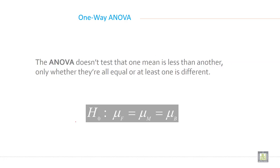The ANOVA does not test that one mean is less than another, only whether they're all equal or at least one is different. So just write the null hypothesis like this.